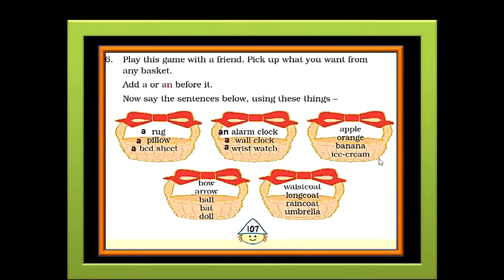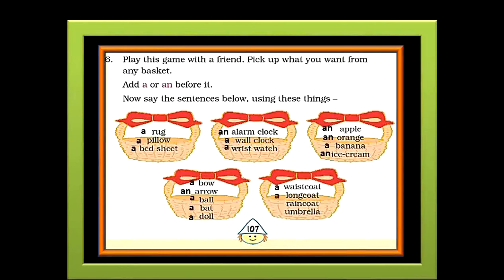Now the third basket. An apple, an orange, a banana, an ice cream. Here apple, orange and ice cream begin with a vowel sound, so we have added an in front of them. But for the word banana we have added A because it starts with a consonant sound, B. Moving forward: a bow, an arrow, a ball, a bat and a doll. Now the fifth basket: a waistcoat, a long coat, a raincoat and an umbrella.